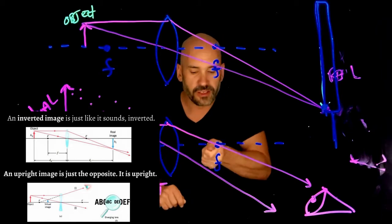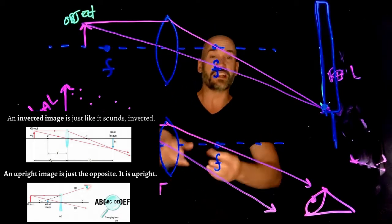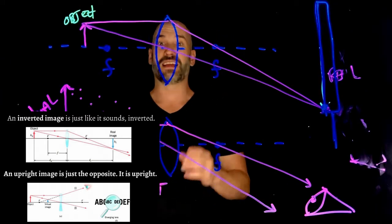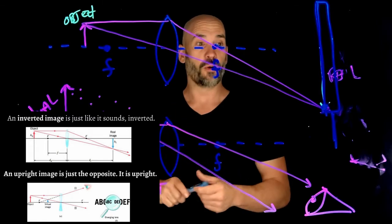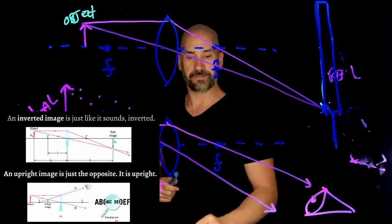In other words, if we look at a bug in a magnifying glass, we don't see it upside down. We see it the right way. Whereas slides in a slide projector, you actually have to flip the image in order to see it upright as it's supposed to be seen.